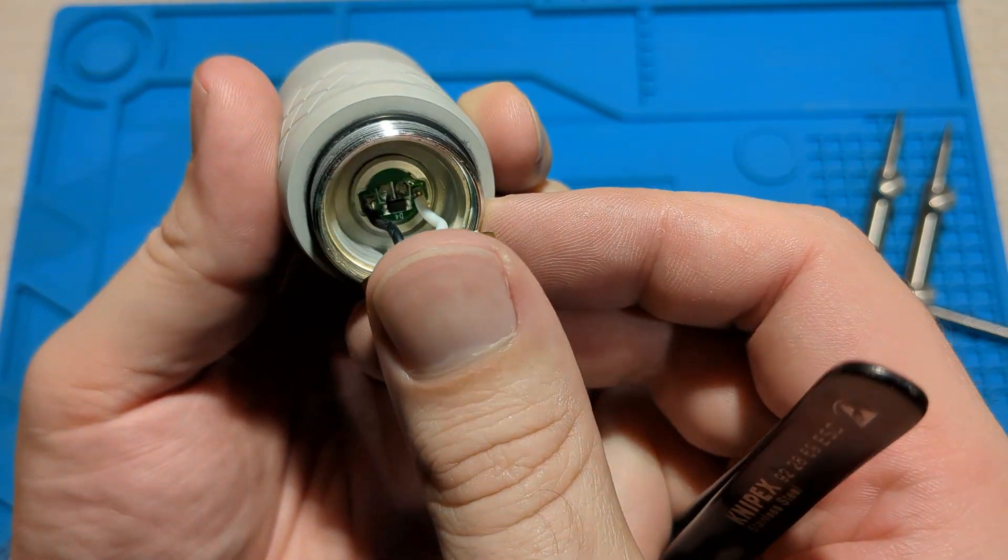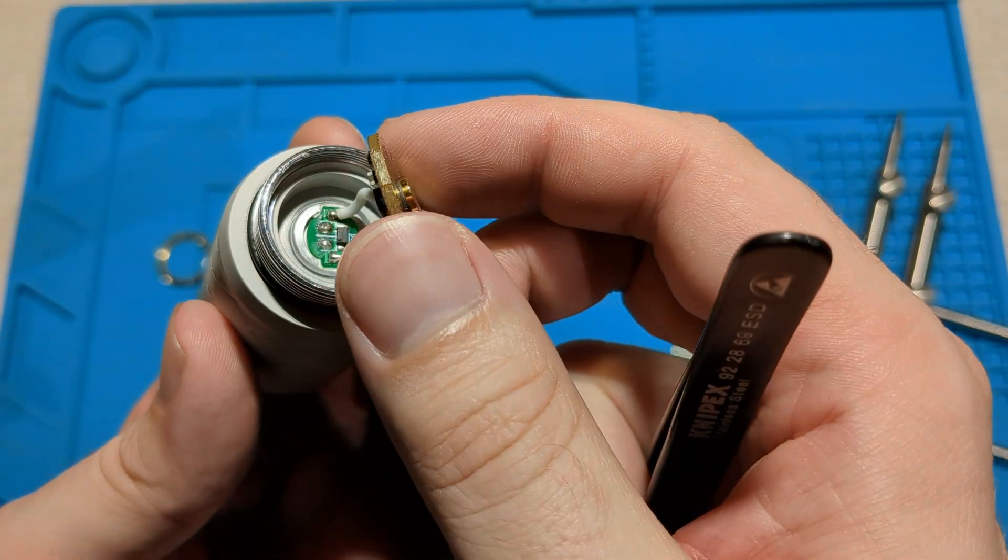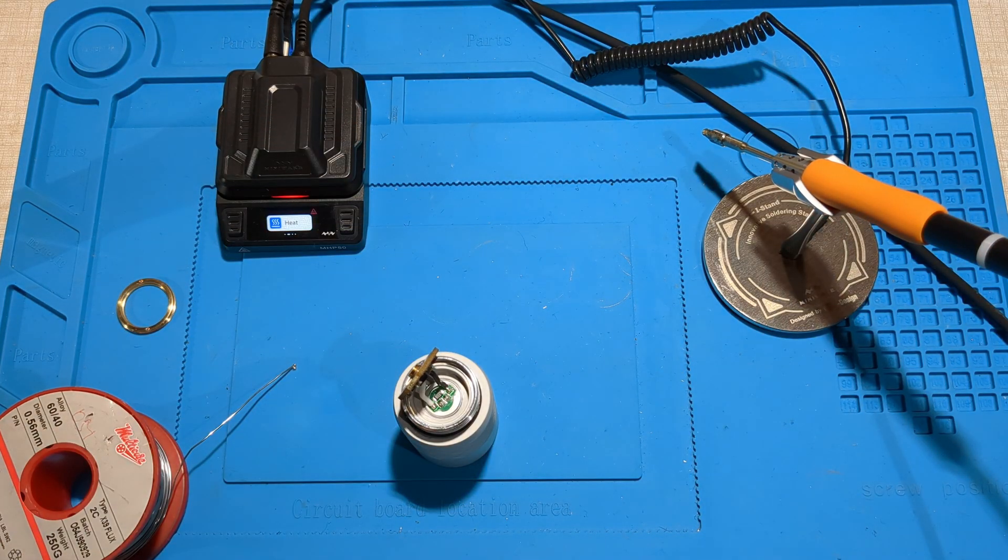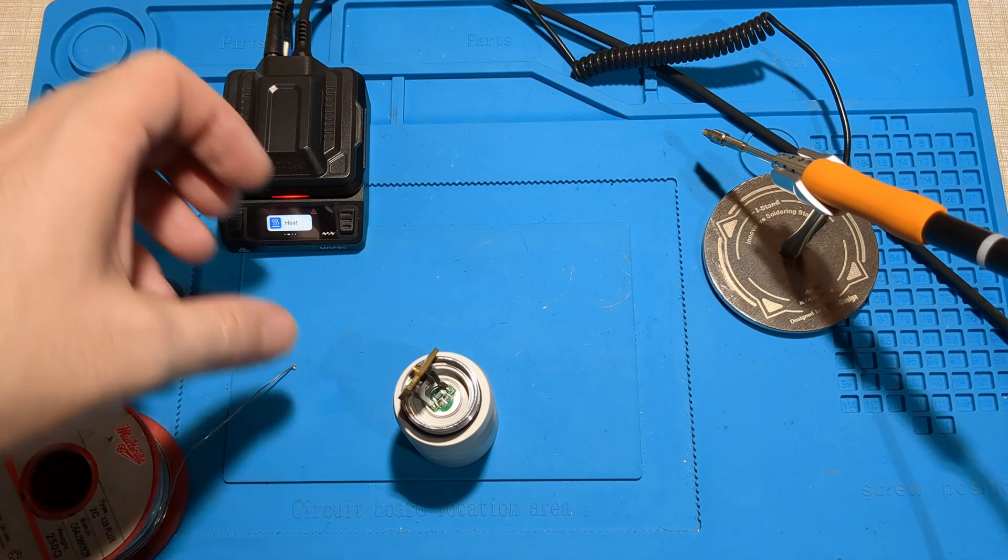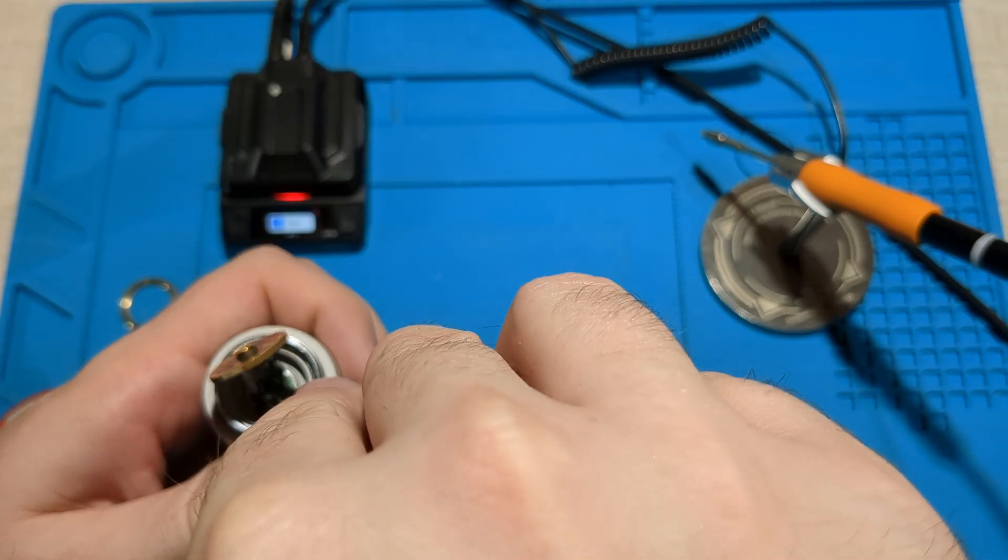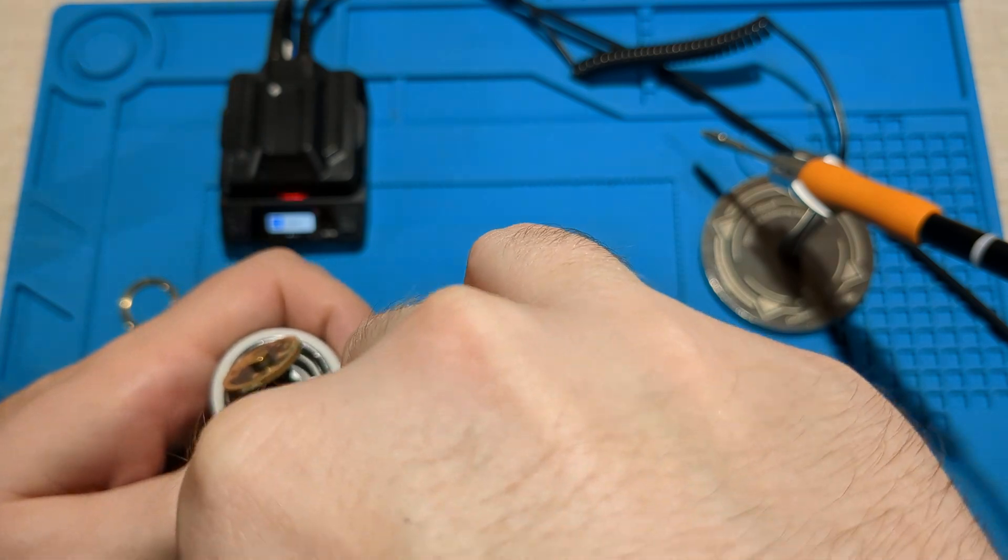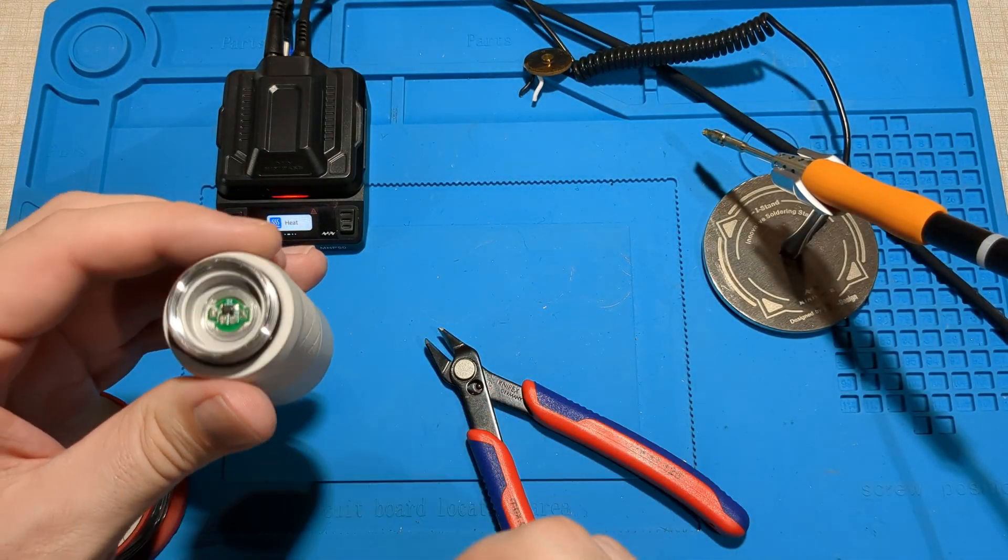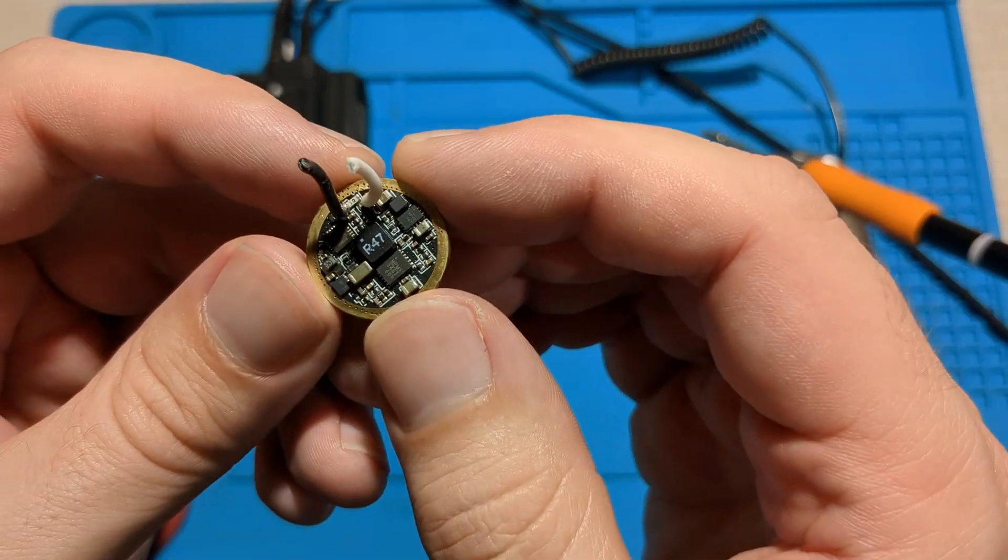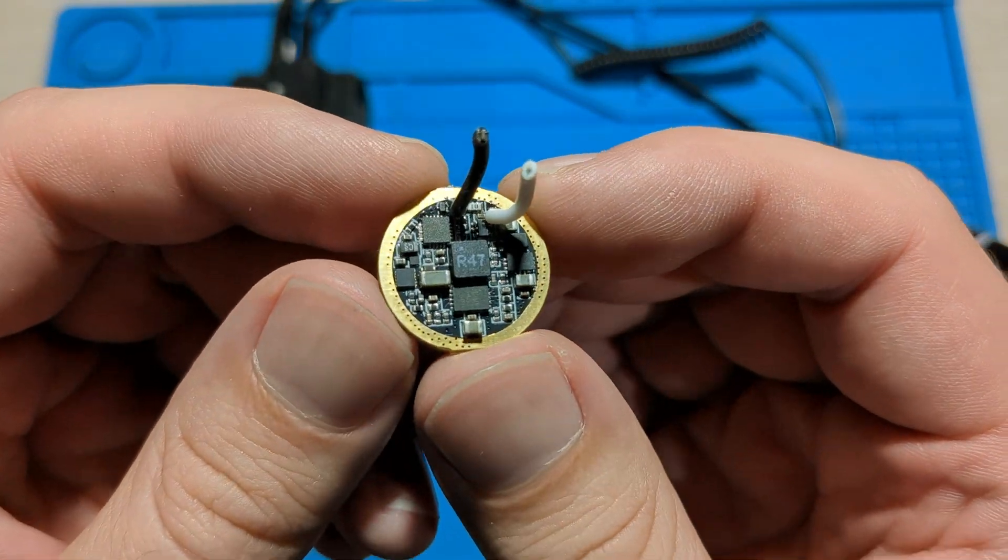And it's connected up to this LEP module. How do we get the module out? If you don't want to mess around with soldering, the easiest way is just to use some cutters and simply cut the wire off. Boom. You can always replace the wires. That's way easier, saves time. So that is the driver.